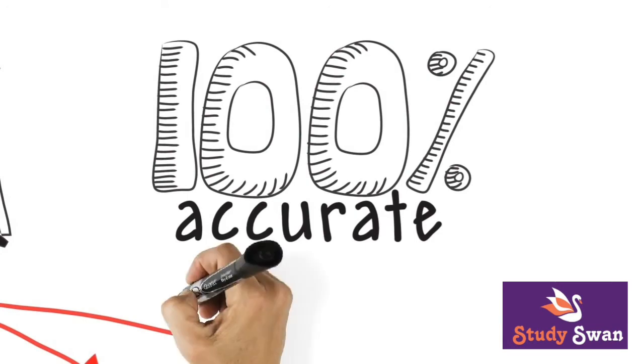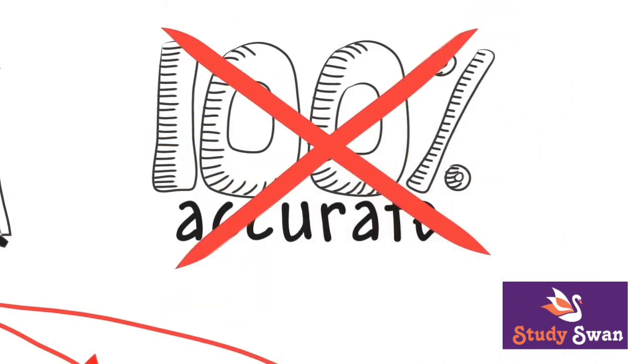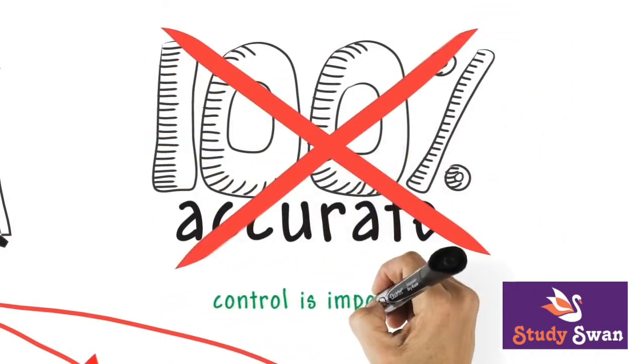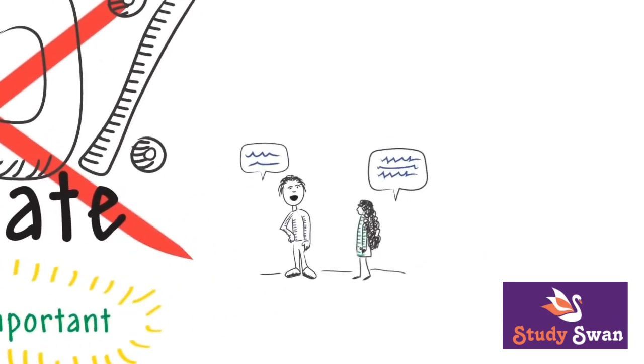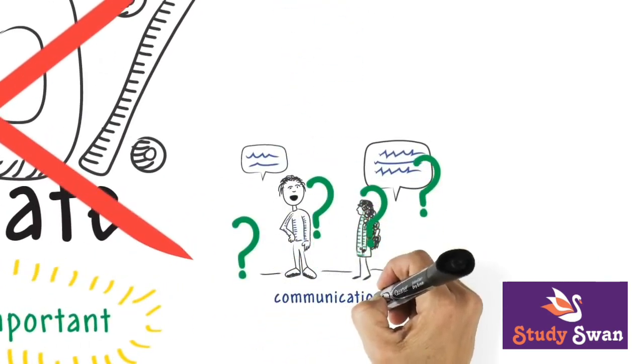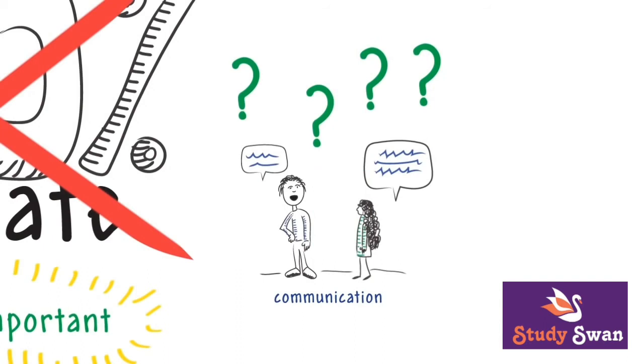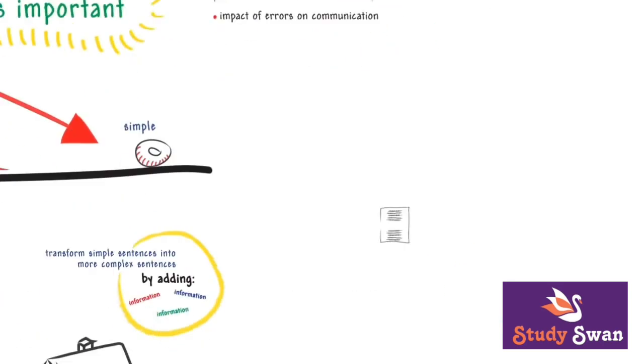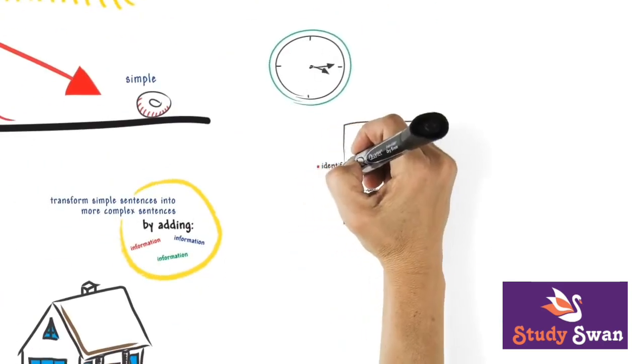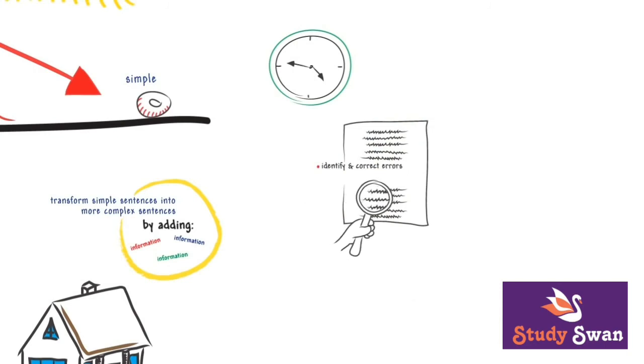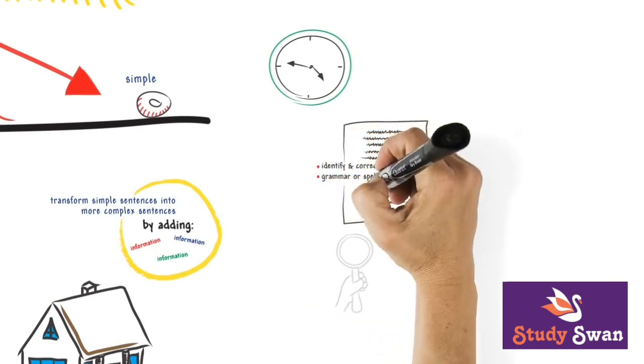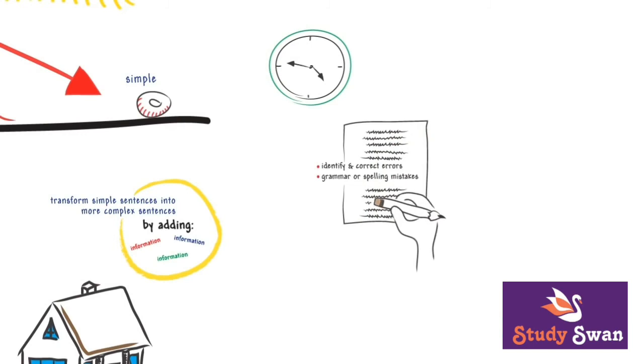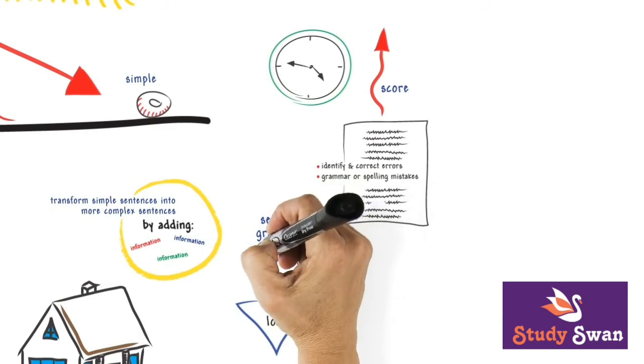Students aren't expected to be 100% accurate in their writing. However, control is important. Some grammatical errors impact communication more than others. You will be scored according to the impact of errors on communication rather than on the number of mistakes. Leave time at the end of writing to identify and correct errors. You will always find grammar or spelling mistakes. Correcting these can improve your score. See the grammar checklist in the accompanying download.